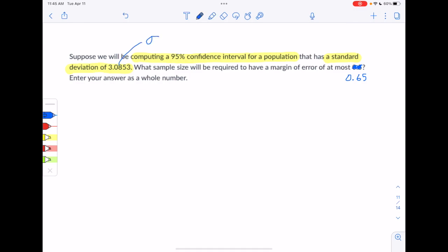All right, so this is sigma, and we have a 95% confidence interval. And what is it that we're trying to find? We're trying to find the sample size. So let's go to our formula sheet and investigate further on how we're going to do this.